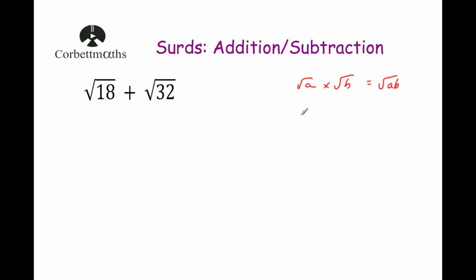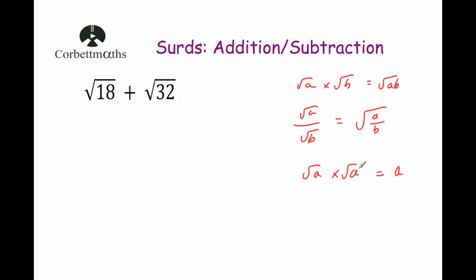You can also divide surds: Root A over Root B equals the square root of A over B. And if you multiply a surd by itself — Root A times Root A — that's equal to A, because A times A is A squared, and squaring then square rooting gives you back A. For instance, Root 3 times Root 3 is equal to 3. Those are the important rules you need to know.